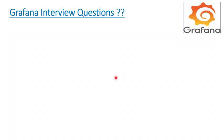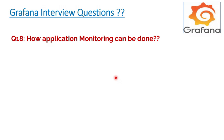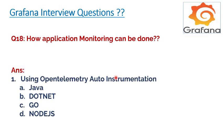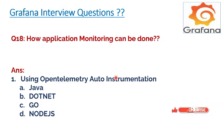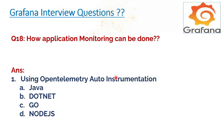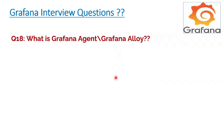Next question: how can application monitoring be done if your application is on Kubernetes using Grafana? This is a niche topic. You can do application monitoring using OpenTelemetry auto-instrumentation. If you're not a hardcore developer, you can use the auto-instrumentation method for technologies like Java, .NET, Golang, and Node.js. If you have a Java background, you can instrument your application to send metrics, logs, and traces to the Grafana monitoring server.